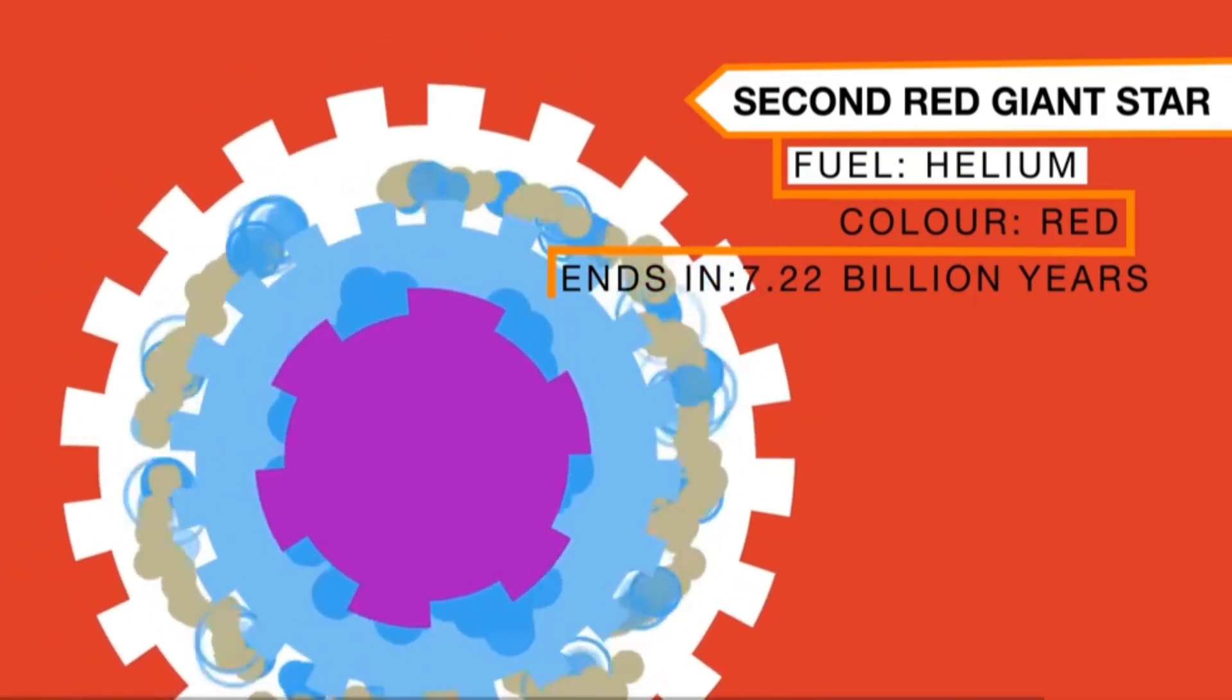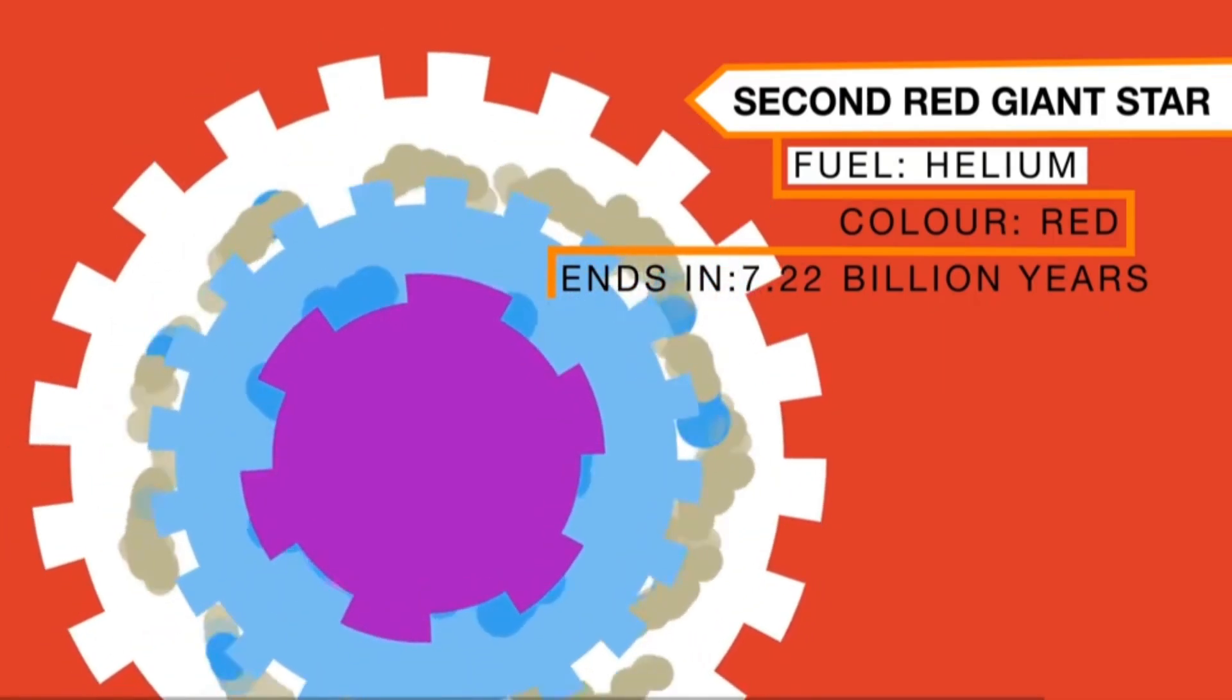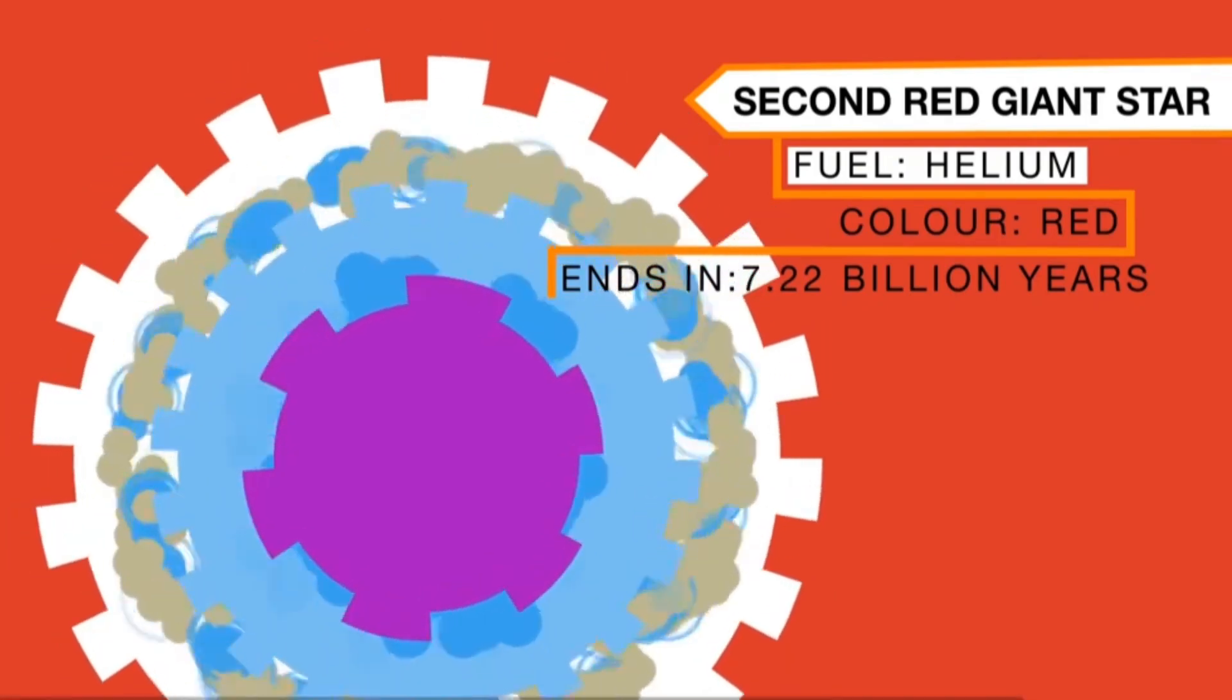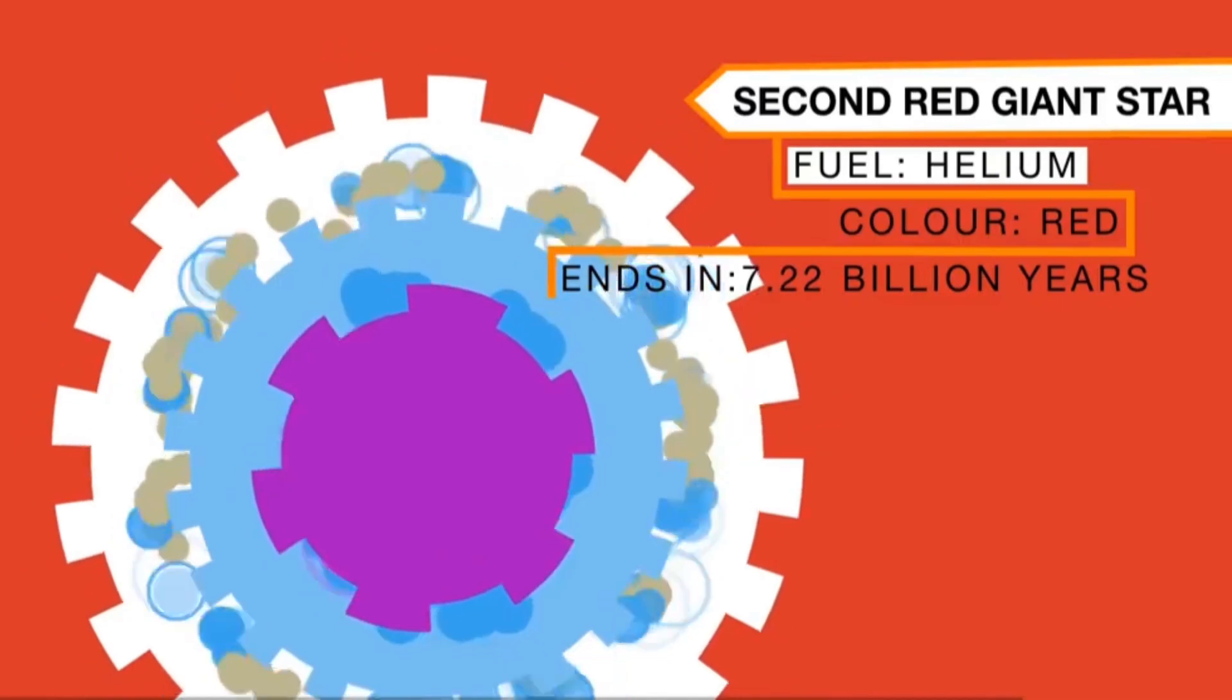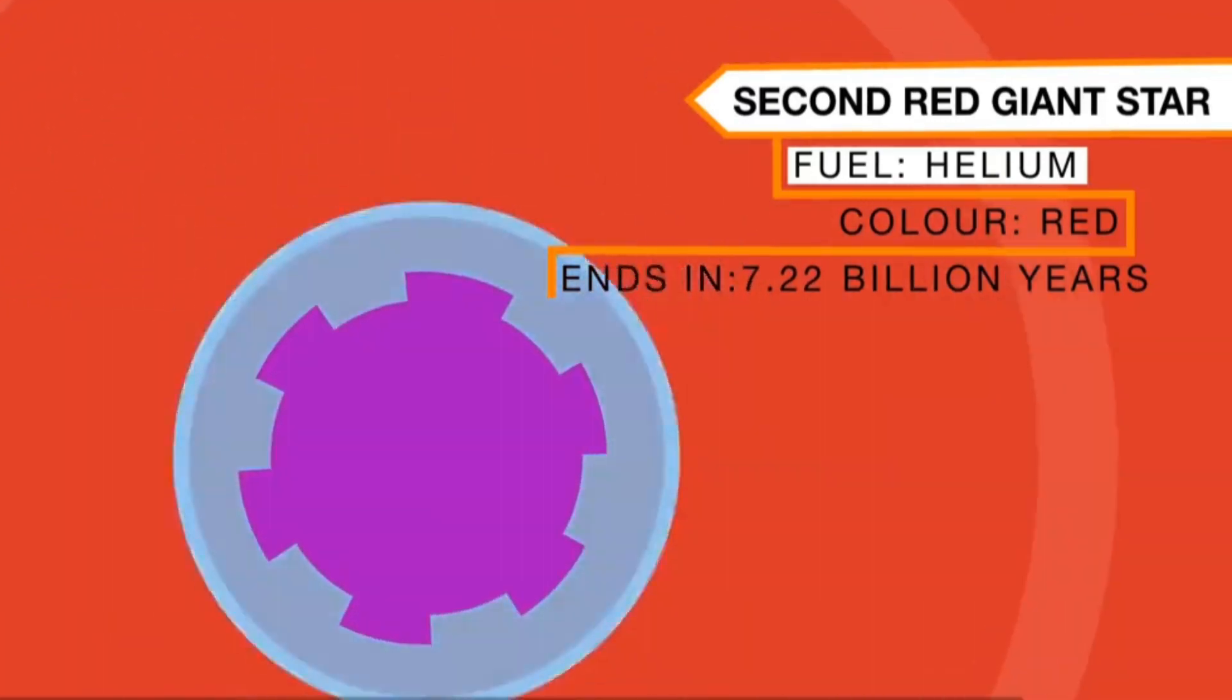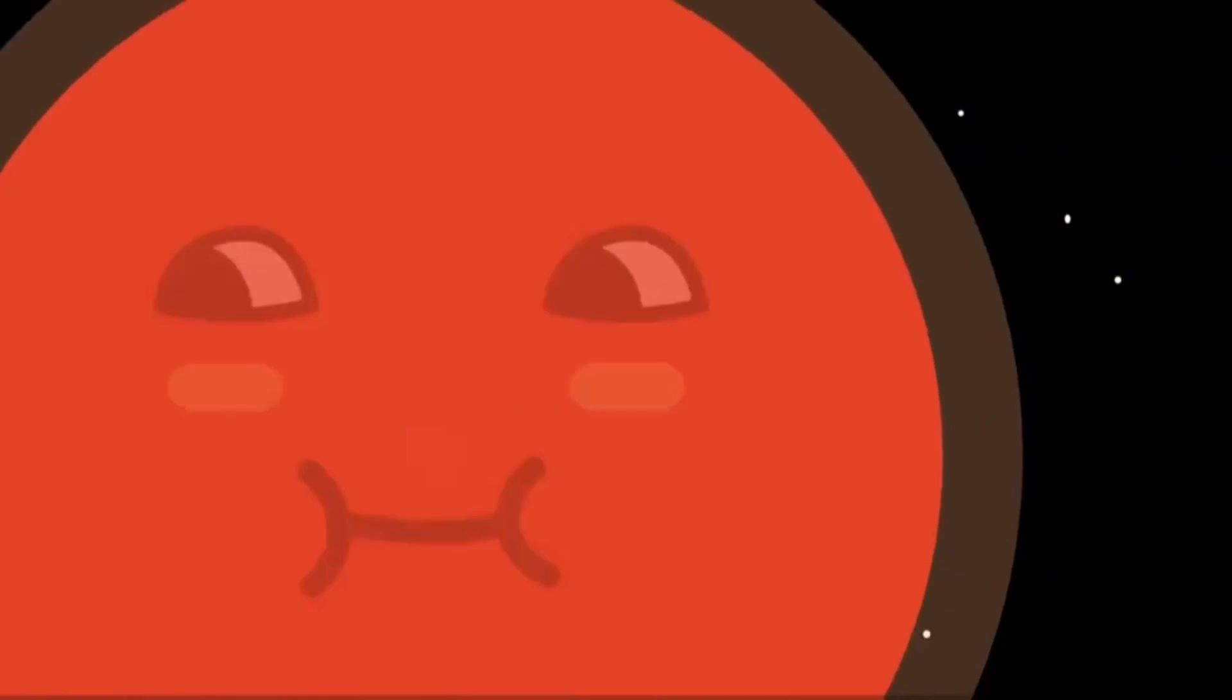The Sun will grow larger, reaching almost 100 times its current size, after absorbing Earth and other planets. It will burn as a red giant for another billion years, and then explode into a white dwarf the size of planet Earth.